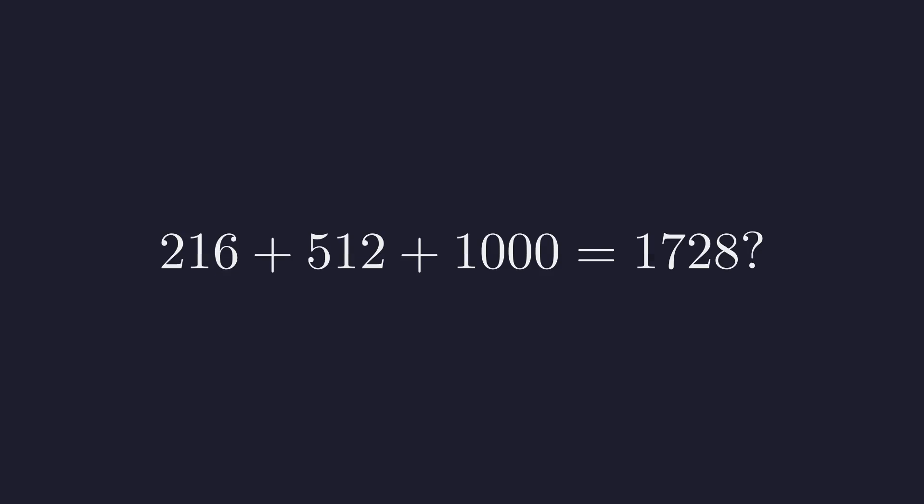6 cubed is 216. 8 cubed is 512. 10 cubed is 1000. And 12 cubed is 1,728. Now, 216 plus 512 plus 1,000 is indeed 1,728. Perfect! The pattern absolutely holds, which gives us confidence that our original solution is correct.